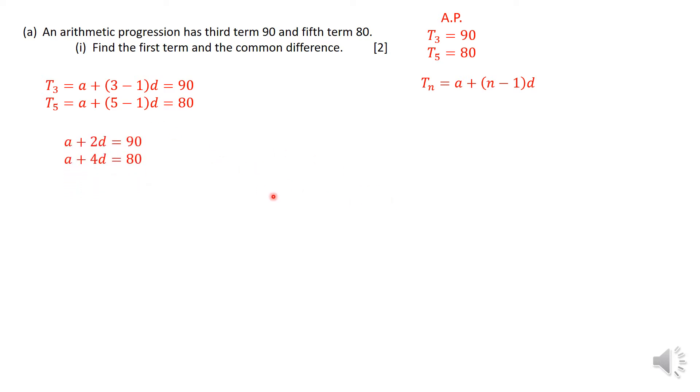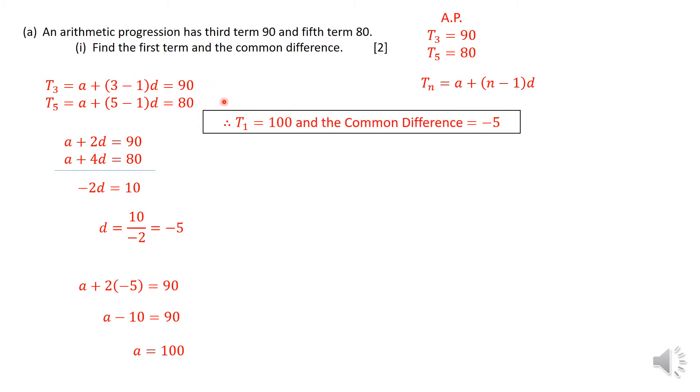Either way you can name them, find one value, substitute the other. If I eliminate A's, I get D to equal negative 5. Then I take that D and substitute it in either one of the equations. That gives me the value of A to be 100. So the first term is 100 and the common difference is negative 5.